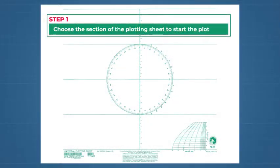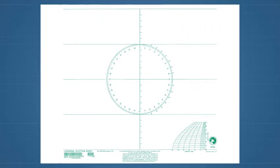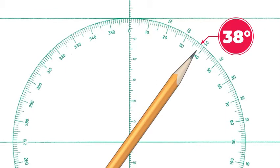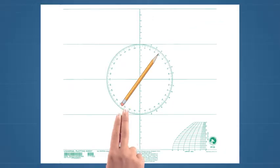Step 1: Choose the section of the plotting sheet to start the plot. As in this question, if your vessel is underway and making way, place or imagine a pencil on the graduated circle with the edge pointing in the direction of movement, in this case 038 degrees true. Start the plot in the quadrant at the eraser end of the pencil. This will ensure there is enough plotting room.